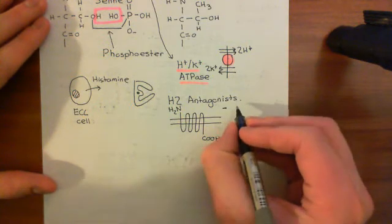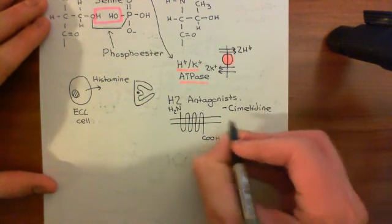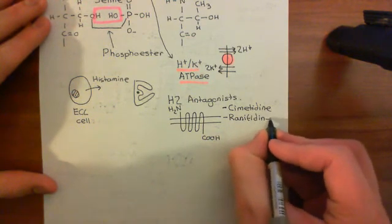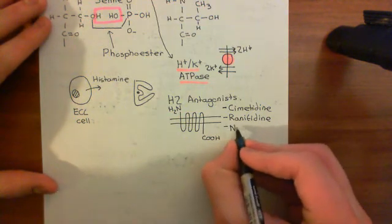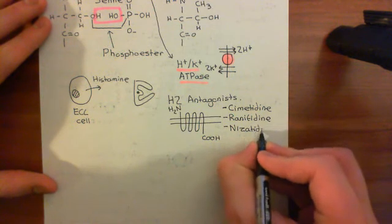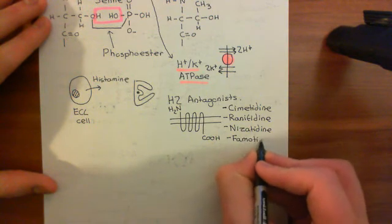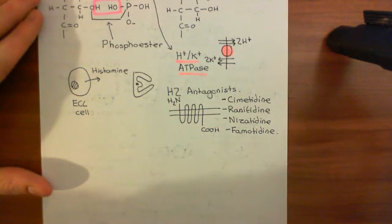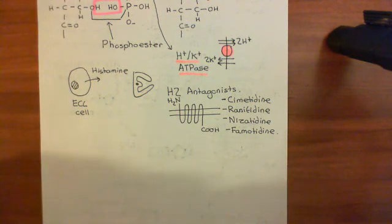H2 antagonists include cimetidine and ranitidine, as well as nizatidine and famotidine — all competitive H2 antagonists. All of these drugs reduce basal secretion of hydrochloric acid by stopping the ECL cells from being able to stimulate the parietal cells. We'll continue this discussion in the next video where we'll discuss the G cells and gastrin.